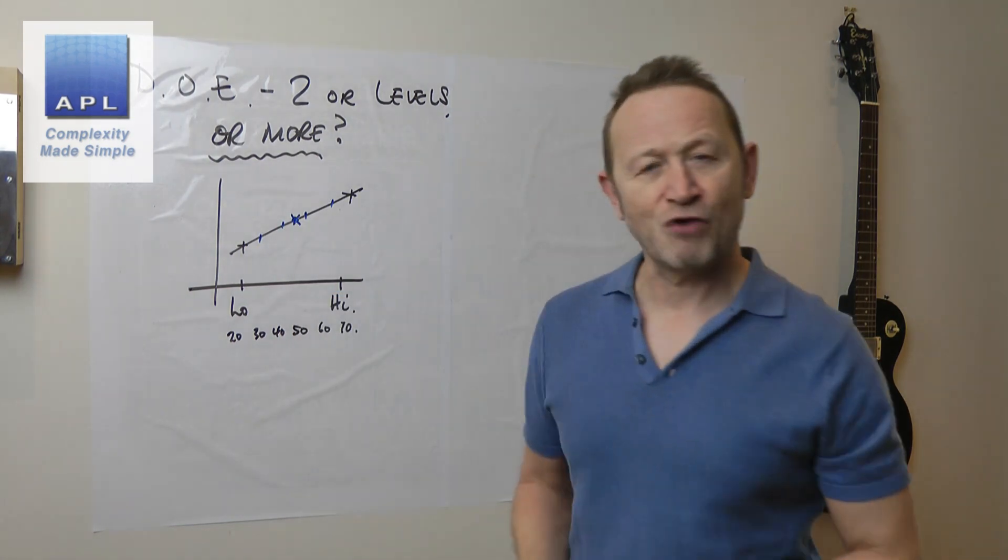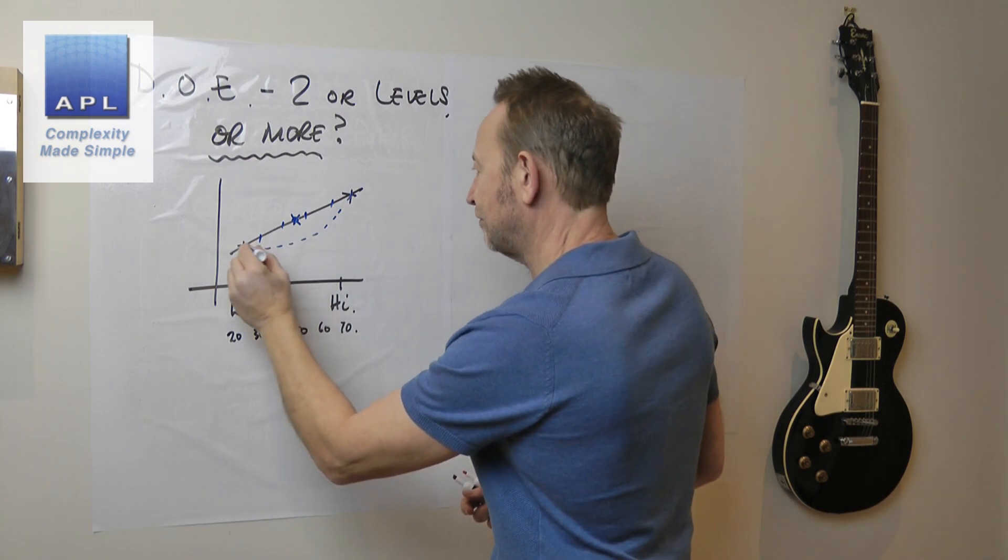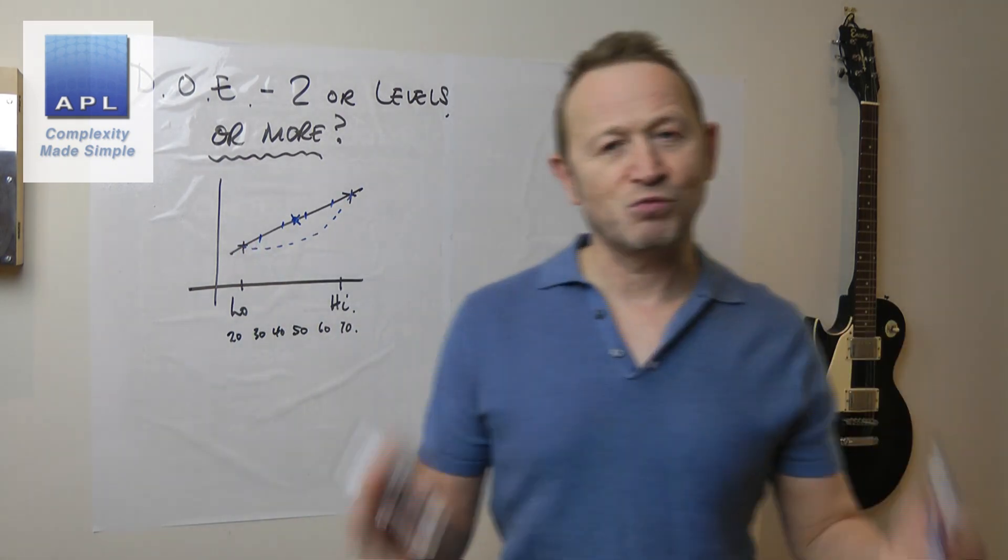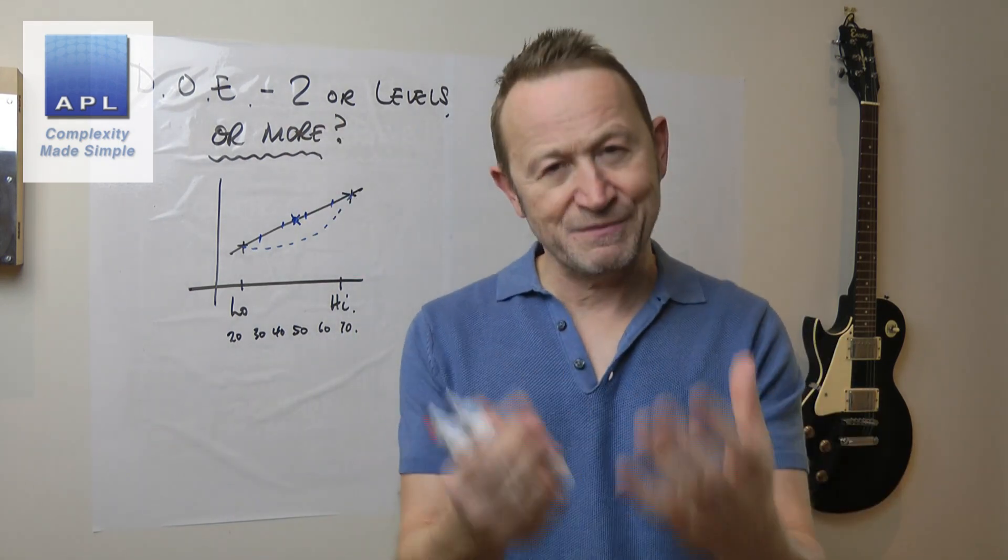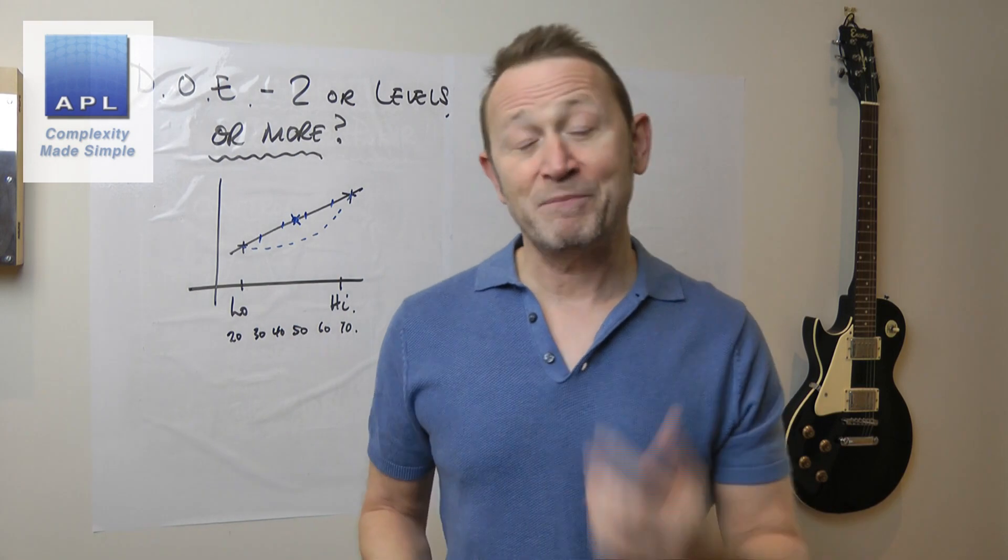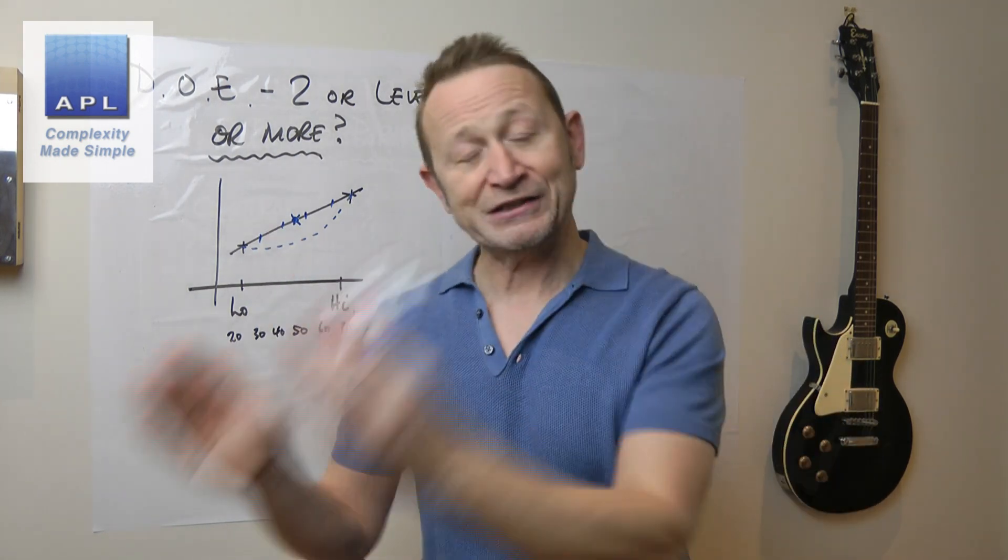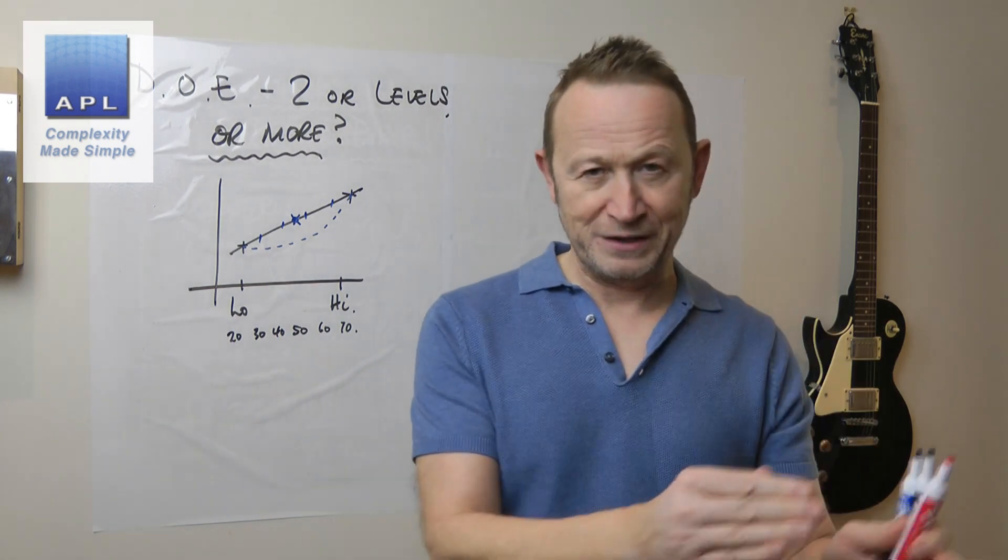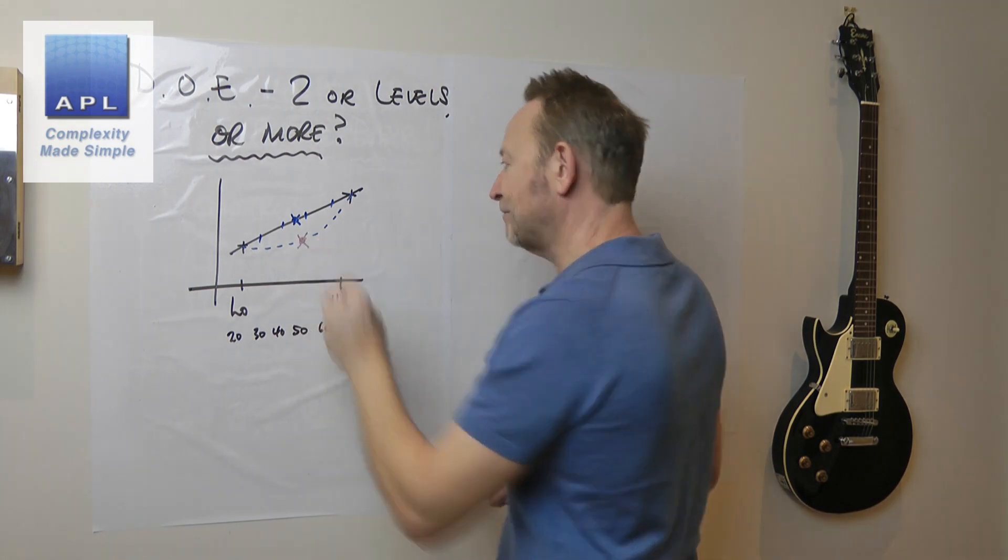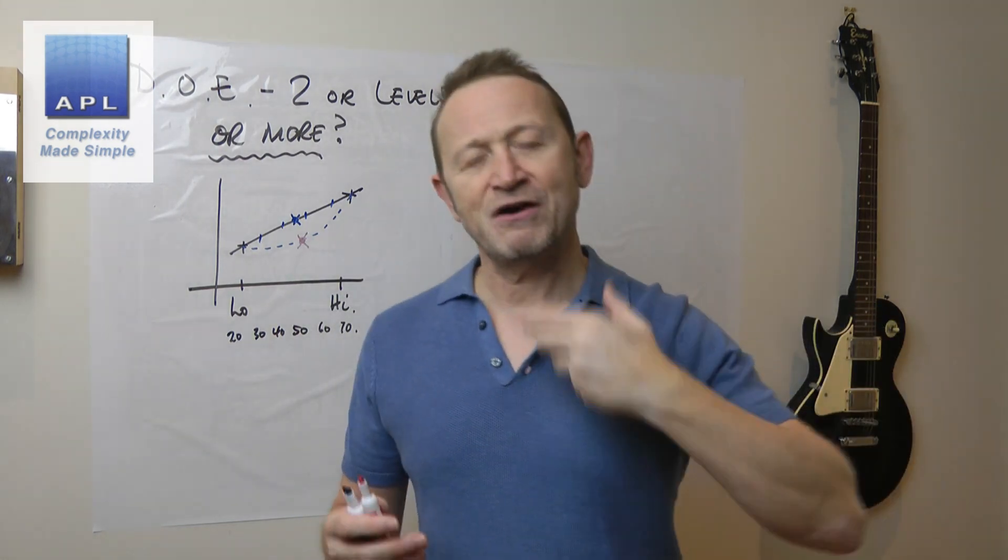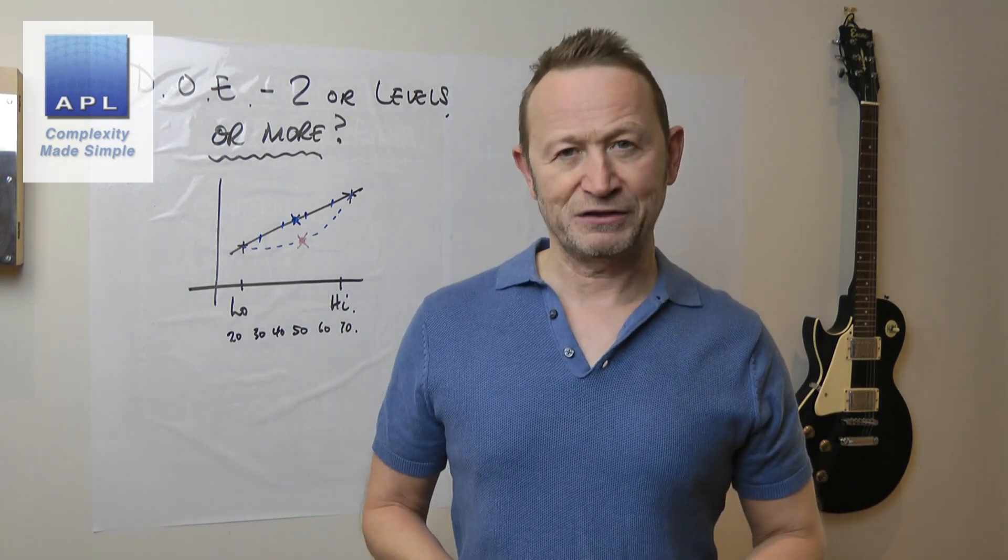Because if the model was truly curved, that's going to be its weakest point. So 3 points really is the minimum you're going to get away with. And the best way to do this is to start with 2, let's confirm in the middle. If I don't confirm, if I hit this point here unexpectedly, then I will augment into a 3-level designed experiment.